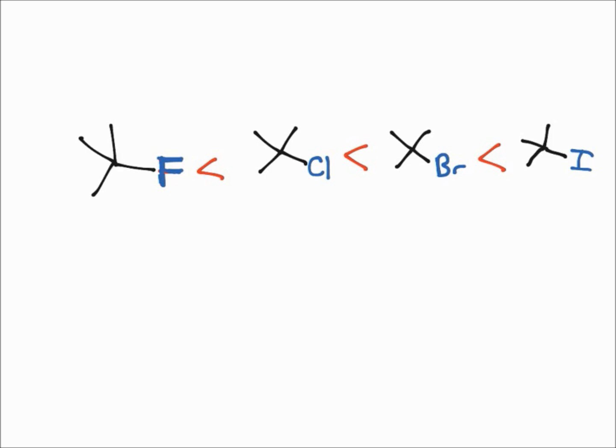Pretty much as you go down the periodic table the rate of the reaction will increase, and this is due to iodine being a bigger atom and so that makes it a better leaving group.